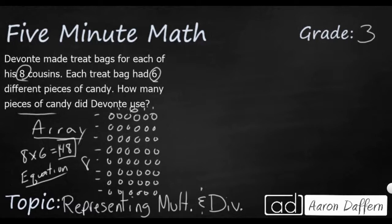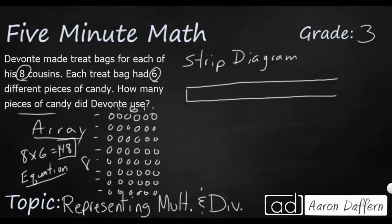What about a strip diagram? Strip diagrams look different based on what kind of operation we're using. In this case, we are using multiplication and we know that we have eight cousins. What I'm going to do is draw a big long strip here and I'm going to cut it into eighths. How I do that is I take my whole, cut it in half, cut each half in half. Now I've got fourths. Then if I cut each fourth in half, I've got eighths. So I've got eight different boxes here and inside each of them would be six.